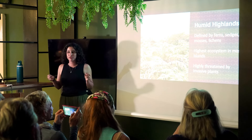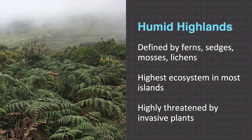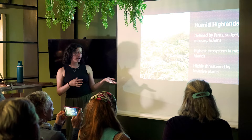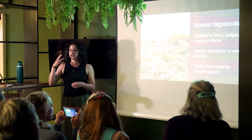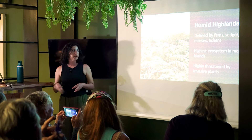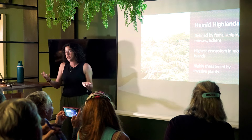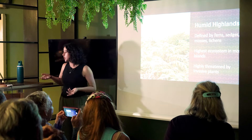Our final zone is the humid highlands — the most humid area, but the tall canopy is gone. At the top, the ecosystem is mostly dominated by ferns, mosses, sedges, and lichens. However, this area is also very highly threatened by invasive plants. In the lower regions the climate is very dry, but in the highlands there is much more moisture, so we see a lot more invasion by plants not native to the Galapagos Islands.